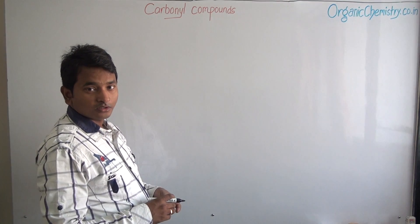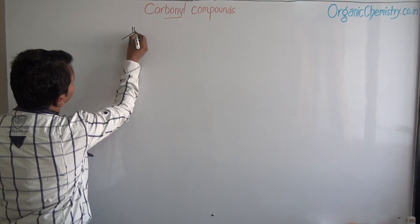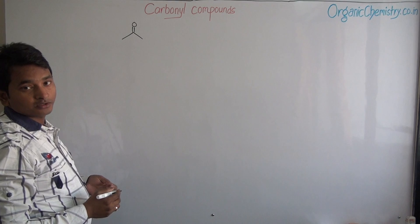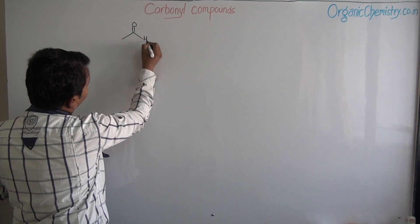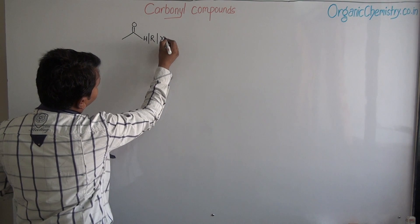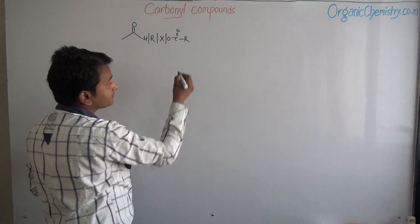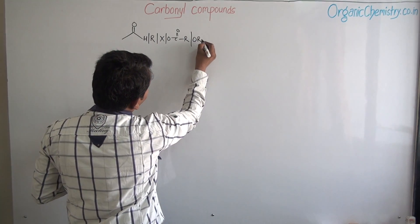Carbonyl compounds are those compounds which have presence of CO group. This may be aldehyde, ketones, acetylide, anhydride, acetyl.